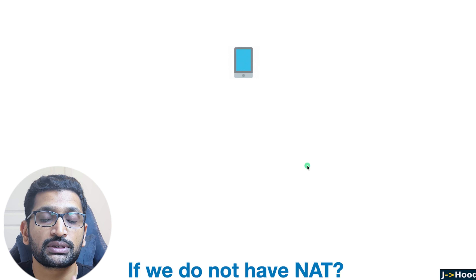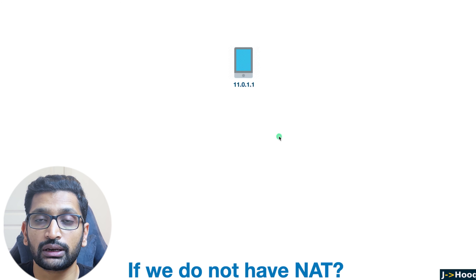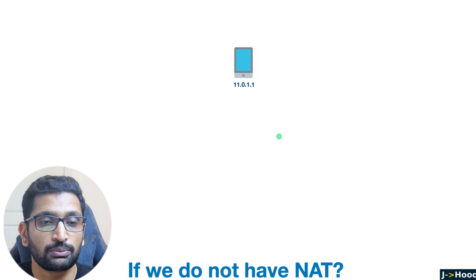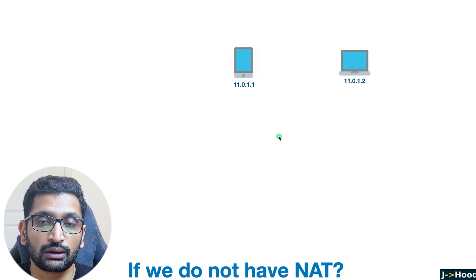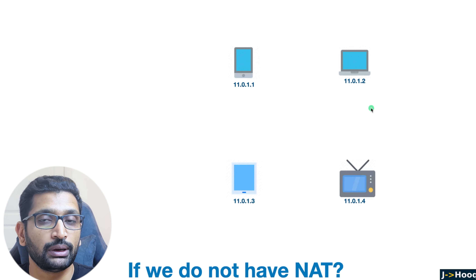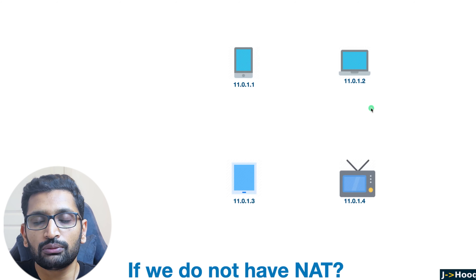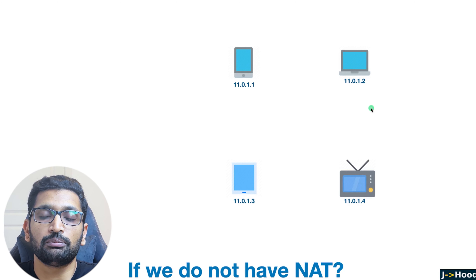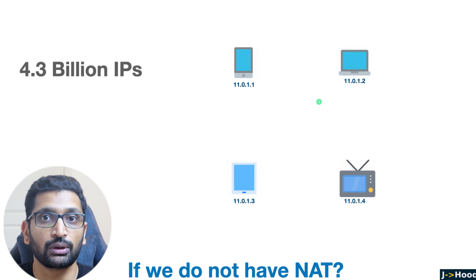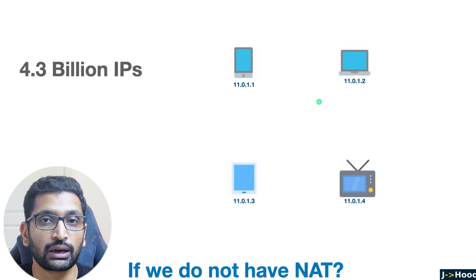Imagine a scenario where you have a device connected to the internet — in this case a mobile — with its own public IP address. In the world there could be other devices like laptops with unique IP addresses, iPads, and smart TVs with their own IP addresses. So there could be billions of devices each with their own unique IP addresses, but I am specifically talking about IPv4, not IPv6.